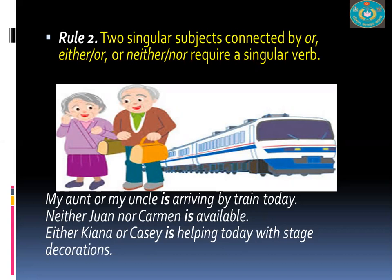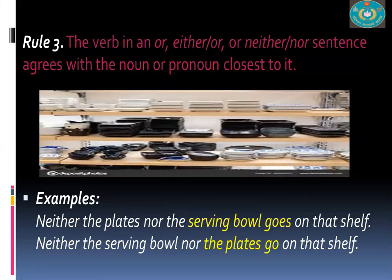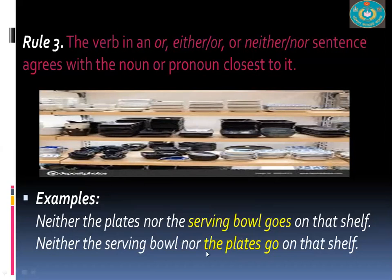Rule Three: The verb in an 'or', 'either...or', or 'neither...nor' sentence agrees with the noun or pronoun closest to it. For example: 'Neither the plate nor the serving bowl goes on the shelf.' Here, 'serving bowl' is closest to the verb and is singular, so the verb is singular. In the reversed sentence, 'Neither the serving bowl nor the plate goes on the shelf' — 'plate' is closest, and as it can be plural, the verb takes plural form.